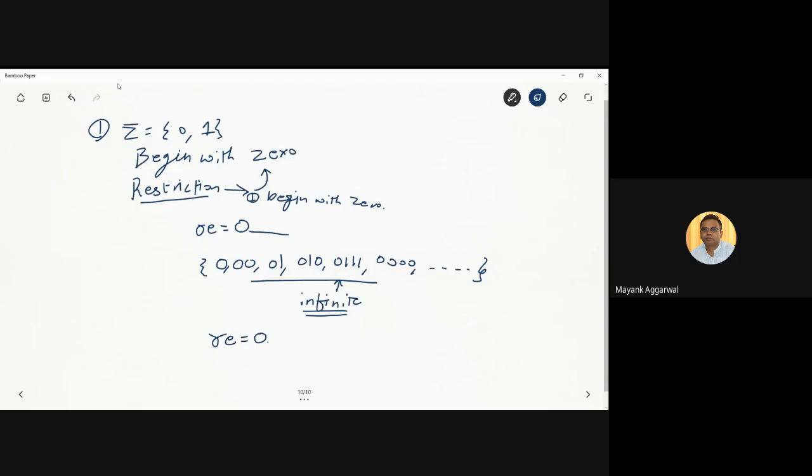Whenever or comes into the picture, then plus comes - either zero or one can come. Zero आएगा और zero के बाद कुछ भी आ सकता है, zero के बाद कोई restriction नहीं है. तो कुछ भी के लिए, previous video में हमने regular expression देखा था. We need to remember these to solve these type of numericals - कुछ भी के लिए क्या था: (0+1)*.